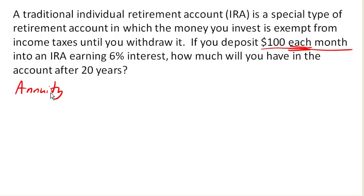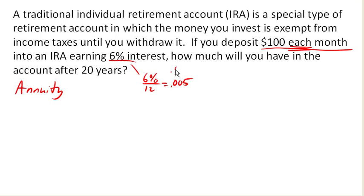We're earning 6% interest — that's 6% compounded monthly, so that's half a percent, or 0.5%, or 0.005 each month in interest.